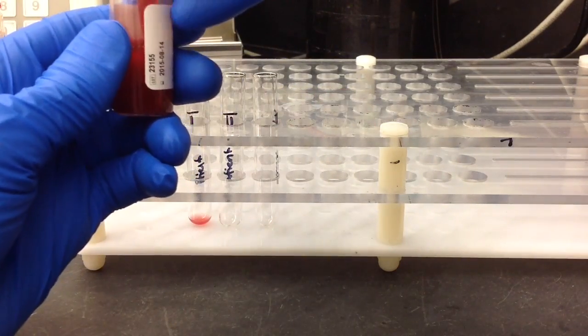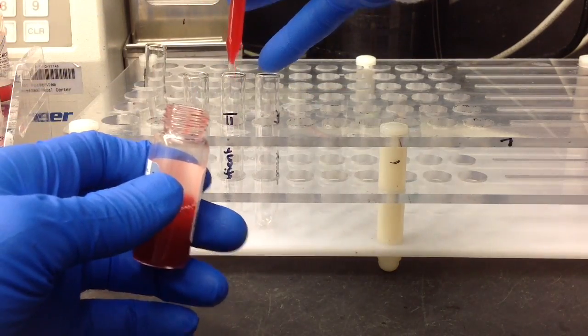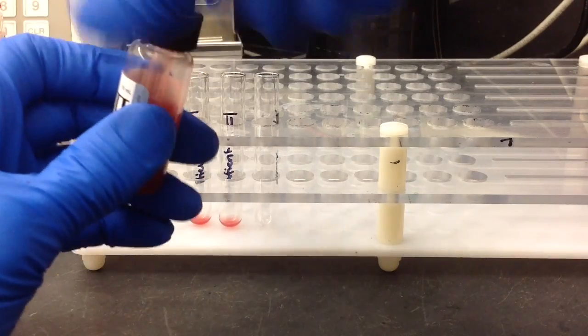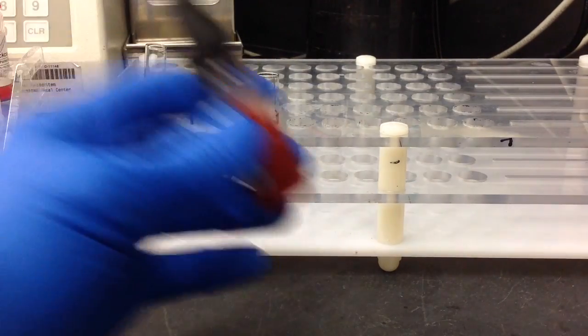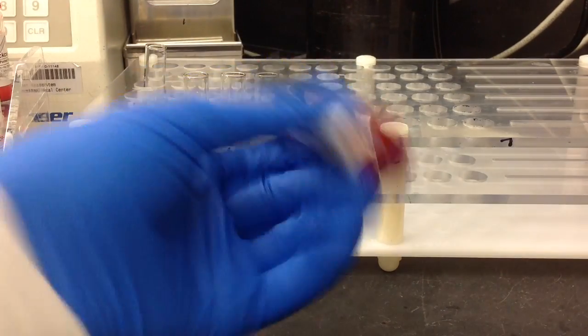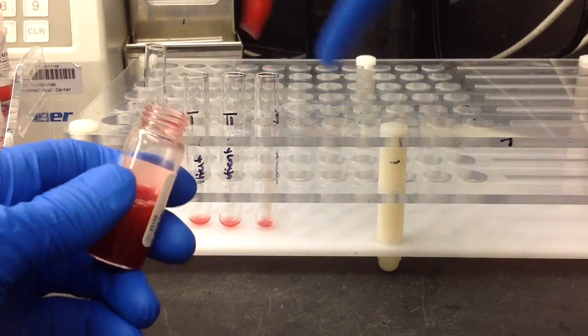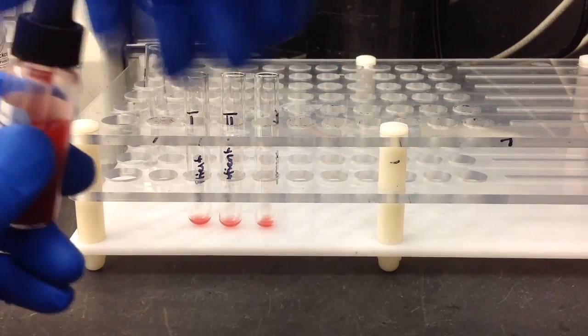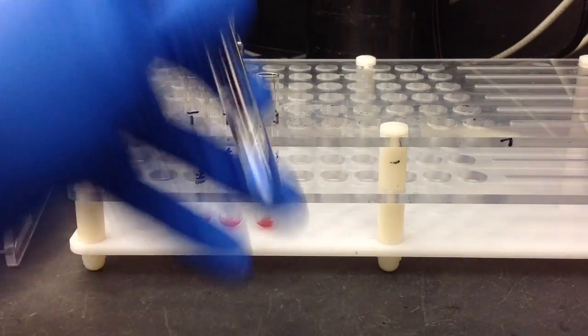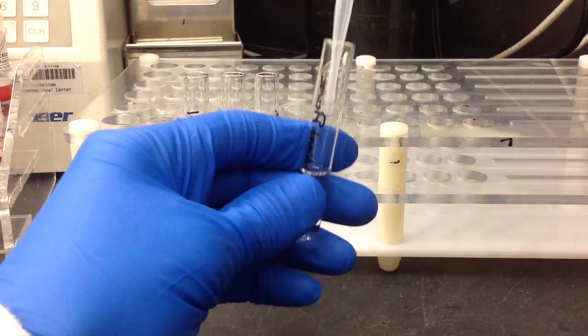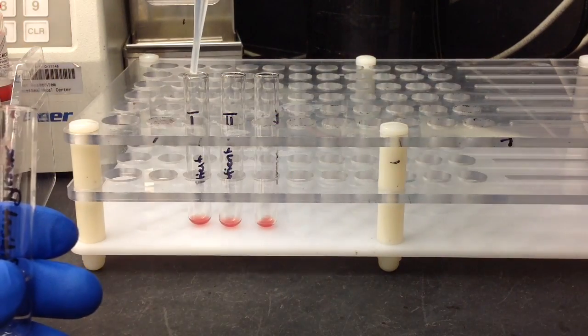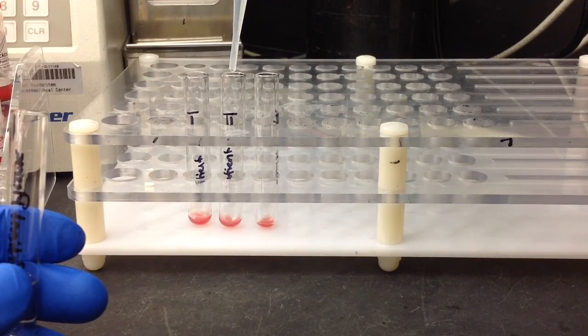...and then one drop of two as well. After you mix it you can make sure that it's completely mixed by checking the bottom of the vials, then one drop of three. After you have the screen cells in their corresponding tubes, you need to add two drops of patient plasma to each of the tubes...